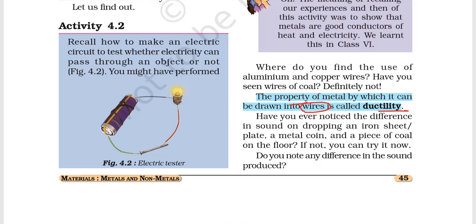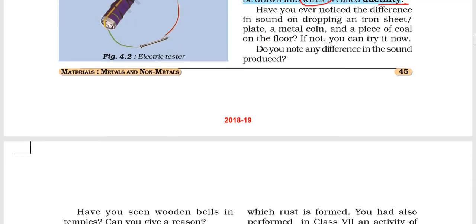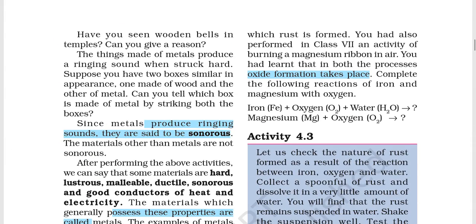So importantly — if a metal can be beaten into thin sheets, it is called malleability; if it can be converted into wires, it is called ductility. The third property is that metals produce ringing sounds, which are called sonorous. So ductility, malleability, and sonorous are the three important properties which are specific to metals.